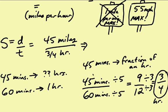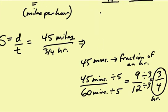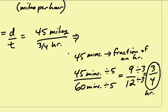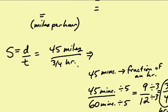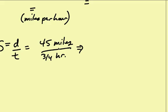We know that 3 quarters of an hour is the same as 45 minutes, so we don't have to hold onto this information any longer. 45 miles divided by 3 quarters of an hour - another way of writing that is 45 miles times 4 over 3 hours.